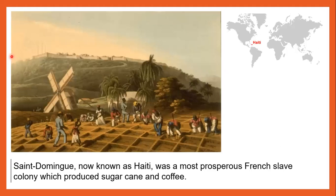Pictured above is an image of Saint Dominique, which is now known as Haiti. Haiti is a small island in the Caribbean. It was the most prosperous French slave colony, which produced sugarcane and coffee.